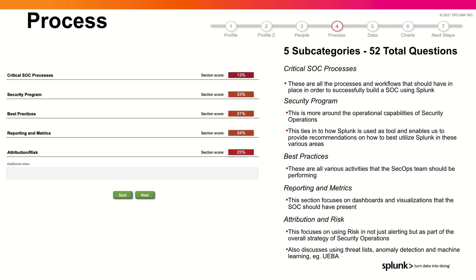Then we'll talk about process. There are five subcategories here and 52 total questions. This is where we talk about critical SOC processes — all the processes and workflows you should have in place to successfully build a SOC using Splunk. In terms of security program, this is more around the operational capability of security operations. In terms of best practices, here are all the things the SecOps team should be doing. And then in terms of reporting and metrics, this really focuses on dashboards and visualizations that you should have within the SOC to measure the effectiveness of what you're doing. And then attribution and risk — this is really focusing on using risk not just in alerting, but as part of the overall strategy of security operations.